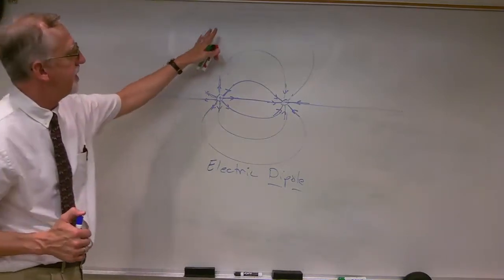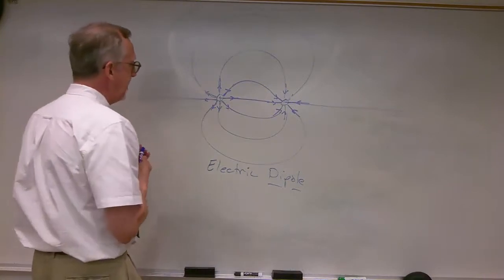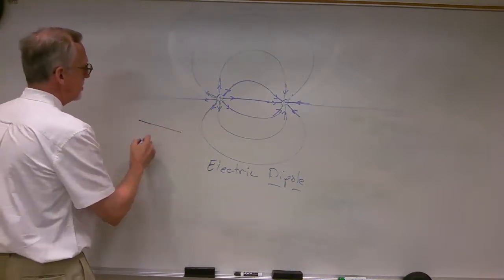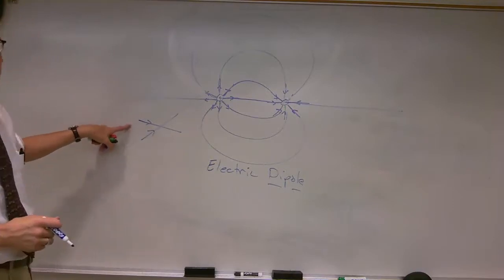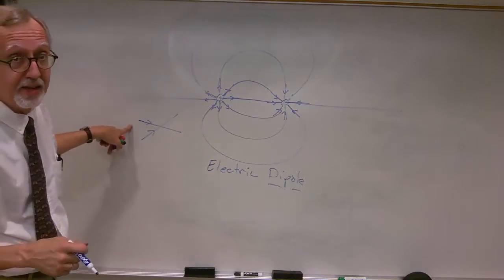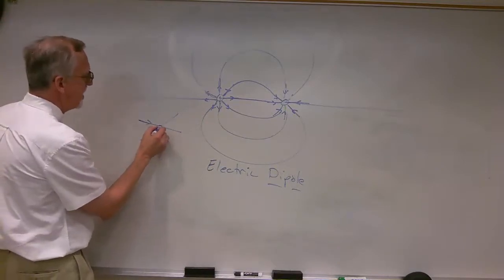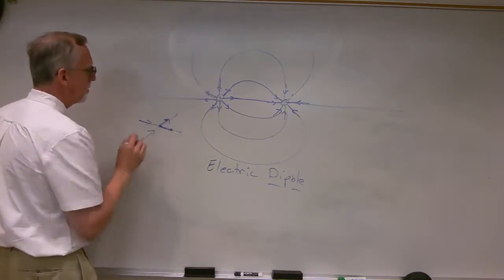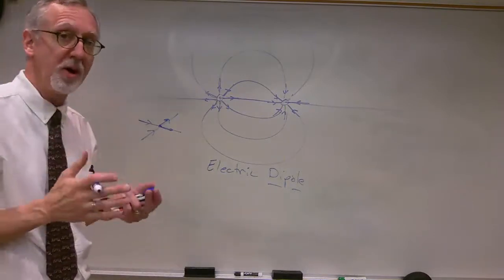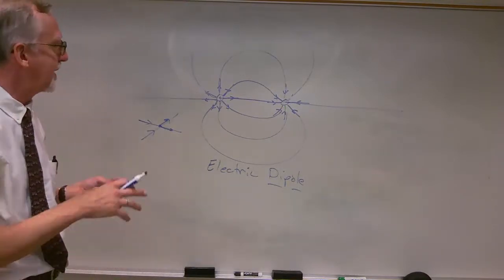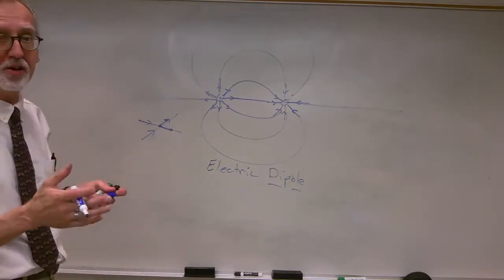One thing to notice is that these lines never cross each other — we do not have a region where the lines cross. Why not? Well, remember, the direction of the lines tells us the direction of the electric field. At a point where two lines crossed, that would seem to indicate that the electric field was pointing in two directions. But we're talking about the total electric field from the combination of all the charges.